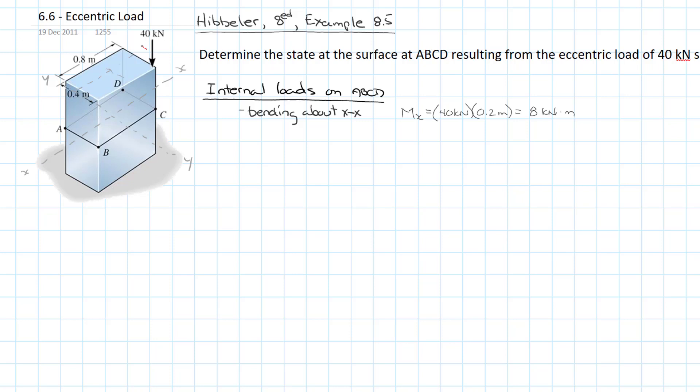And so here I'm going to draw that in. So if I move the 40 up this way, now we're going to have 40 kilonewtons here, but we're also going to have a bending moment about the XX of 8 kilonewton-meters. And so now what we have to do is move those to be coincident with the y-axis.